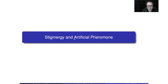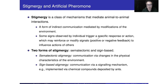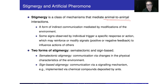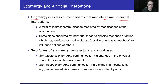We are talking about stigmergy as well as the artificial pheromone. When we implement the Ant Colony Optimization, we need a mechanism to mediate agent-to-agent interaction. We have a population of ants — how do they communicate with each other? That mechanism is stigmergy. Because the ants cannot talk, this is a kind of indirect communication.